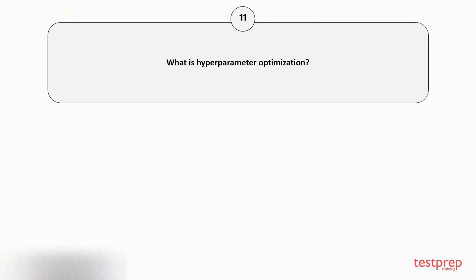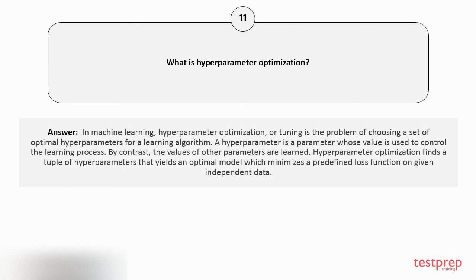Question number eleven: What is hyperparameter optimization? In machine learning, hyperparameter optimization or tuning is the problem of choosing a set of optimal hyperparameters for a learning algorithm. A hyperparameter is a parameter whose value is used to control the learning process. By contrast, the values of other parameters are learned. Hyperparameter optimization finds a tuple of hyperparameters that yields an optimal model which minimizes a predefined loss function on given independent data.